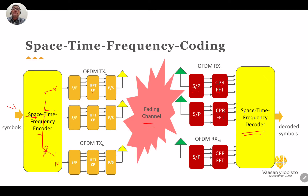However, it should be mentioned that the optimum allocation in time, frequency, and space — including the optimum power allocated for each branch (P1, P2, up to PN) and the modulation level used in each subband — when formulated mathematically, is a very difficult optimization problem.